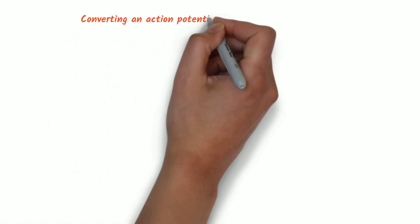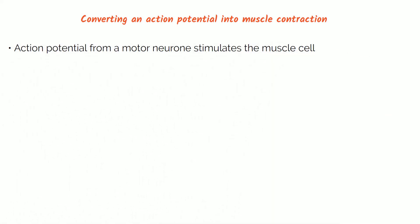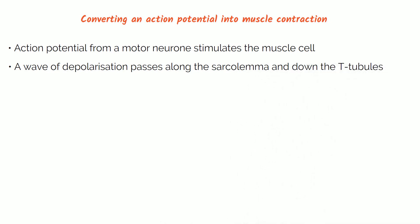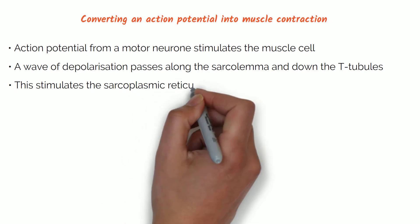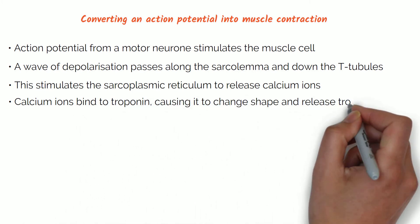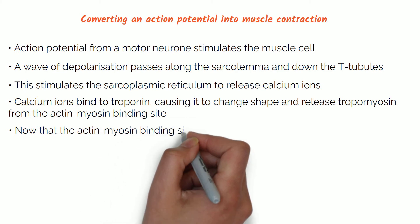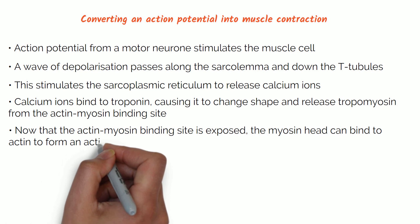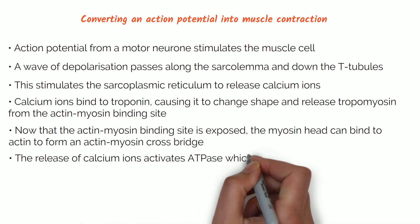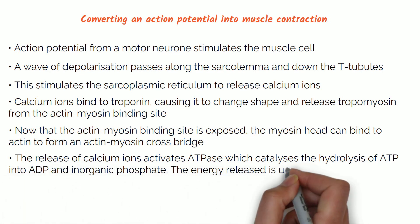So how do we convert an action potential into muscle contraction? First, an action potential from a motor neuron stimulates the muscle cell. A wave of depolarisation passes along the sarcolemma and down the T-tubules. This stimulates the sarcoplasmic reticulum to release calcium ions. Calcium ions bind to troponin, causing it to change shape and release tropomyosin from the actin-myosin binding site. Now that the actin-myosin binding site is exposed, the myosin head can bind to actin to form the actin-myosin crossbridge. The release of calcium ions activates ATPase, which catalyses the hydrolysis of ATP into ADP and inorganic phosphate. The energy released is used by the myosin head to move backwards.